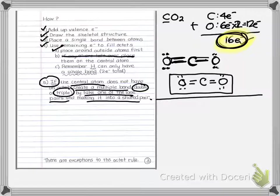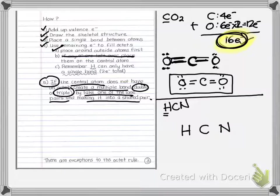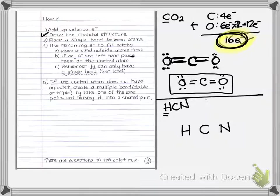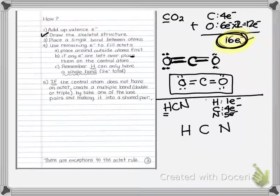Let's try HCN. This one often confuses people on the skeletal structure — hydrogen can't be in the middle, so the skeletal structure follows the written order: H–C–N, with carbon in the middle. Now step one: hydrogen in group 1A has one valence electron, carbon in group 4A has four, and nitrogen in group 5A has five. Adding them up gives 10 electrons total.